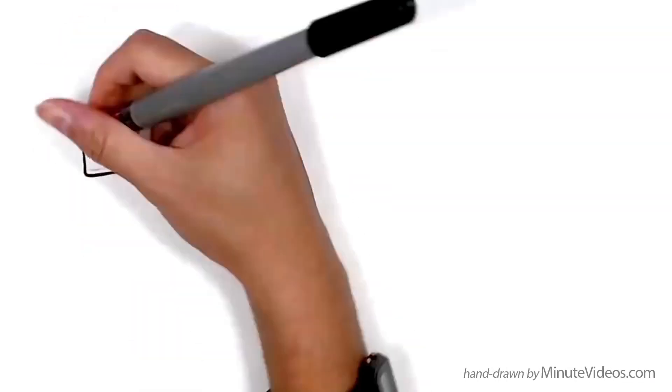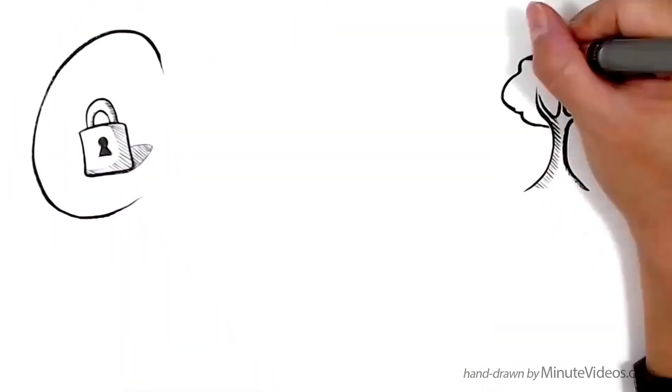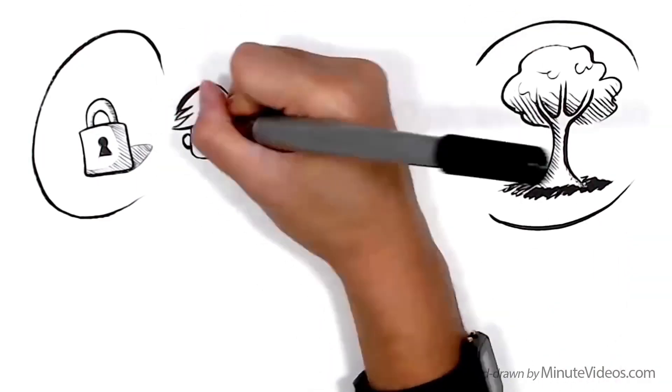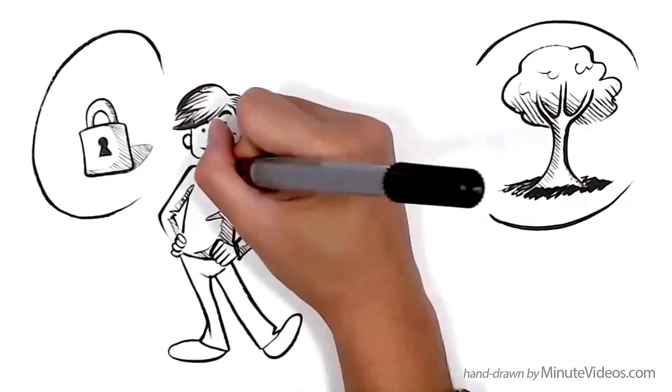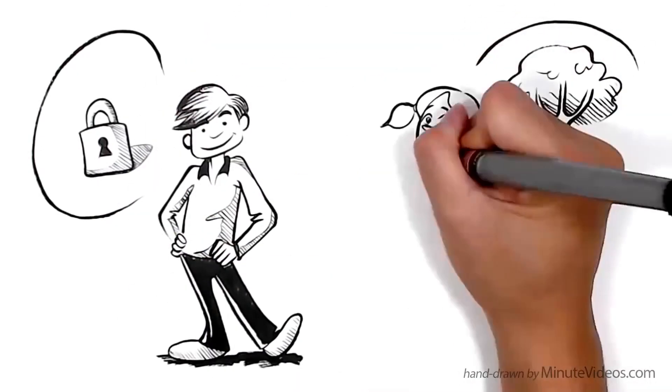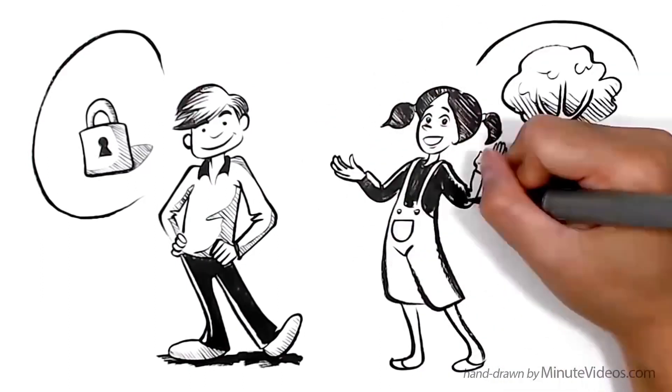To illustrate the difference in everyday life, let's observe two imaginary kids. Jay thinks you've either got it or you haven't. Ann knows that she can learn anything if she wants it enough.